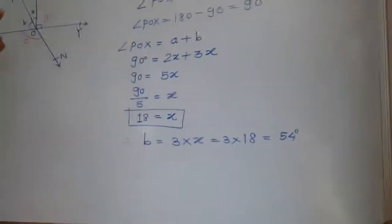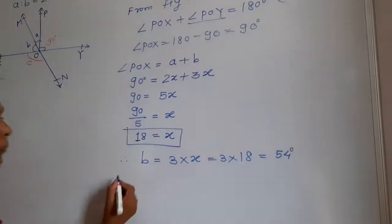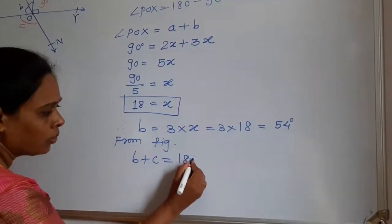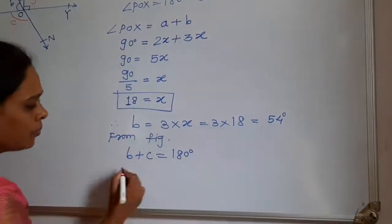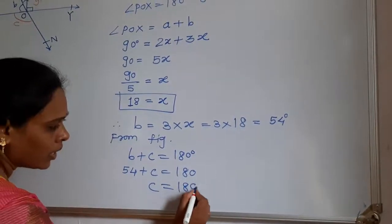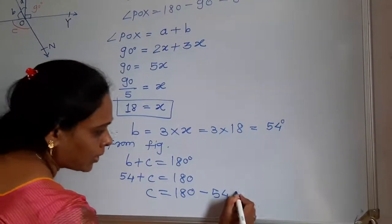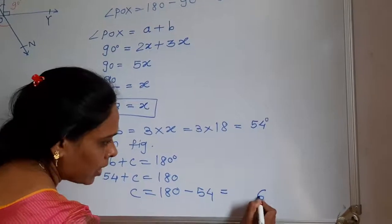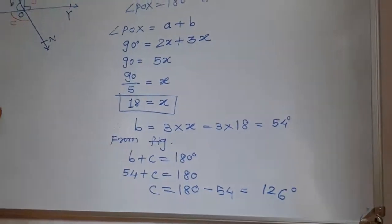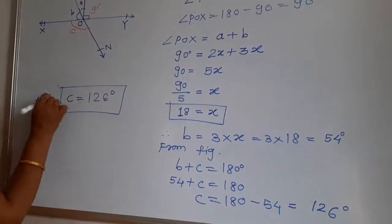Now see in the figure: M is the line and XO is the ray on that line, so these two angles B and C are in a linear pair. From the figure, B plus C equals 180 degrees. But value of B is 54 degrees, so 54 plus C equals 180, meaning C equals 180 minus 54 equals 126 degrees. So the answer is C equals 126 degrees, which is the required answer.